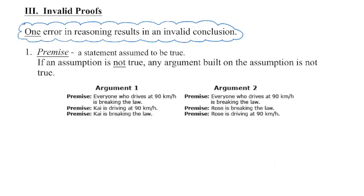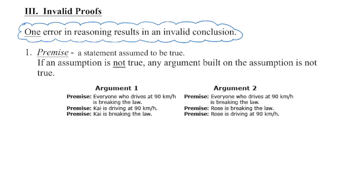Thinking that results in accurate conclusions is vital. If you have even one error in your reasoning, you can draw a conclusion that's not true. We have to be careful with the word assume, as the root word would suggest, but a premise is a statement that we take to be true. If that assumption isn't true, any argument that we build on that is also going to be a faulty argument.